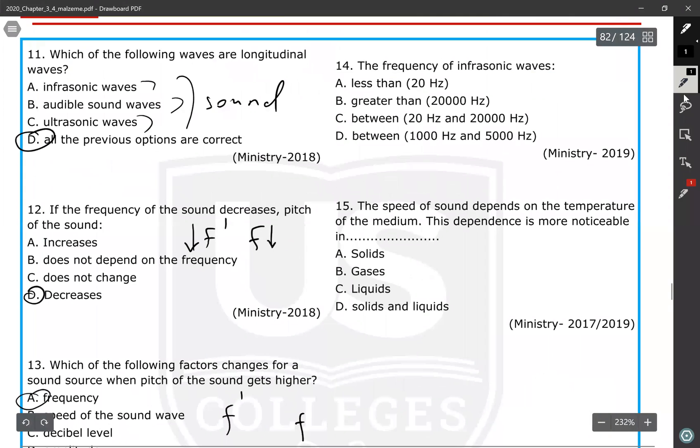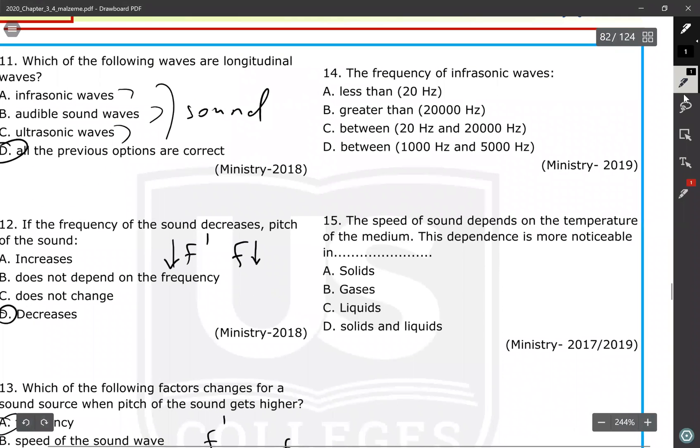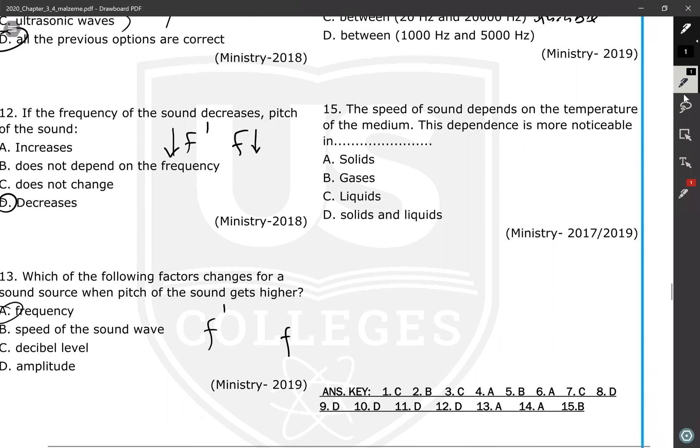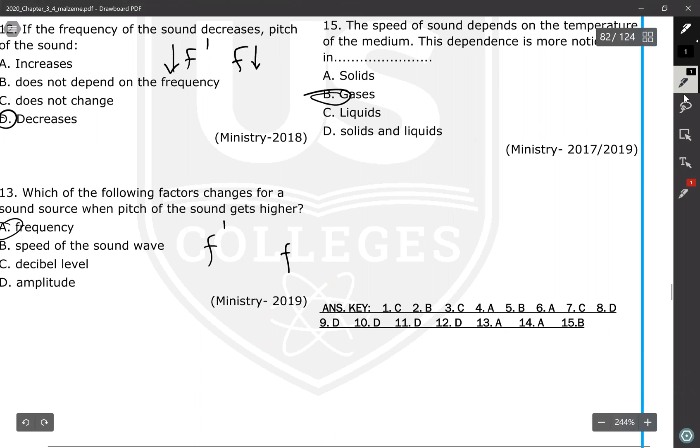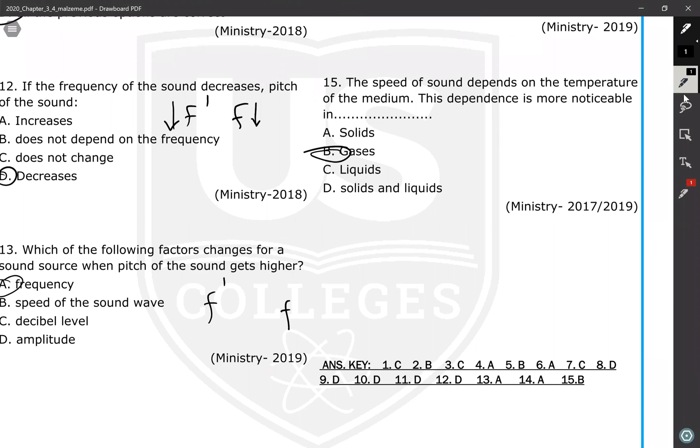Question number 14: the frequency of the infrasonic sound wave is less than 20 hertz - greater than 20, so it's ultrasonic. Between this is the audible range. So the correct answer is A. Speed of the sound depends on temperature of the medium - it depends more in gases. Yes, it is more noticeable in gases, less noticeable in solids and liquids.